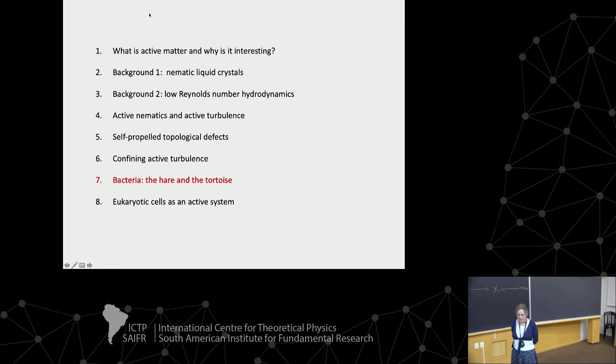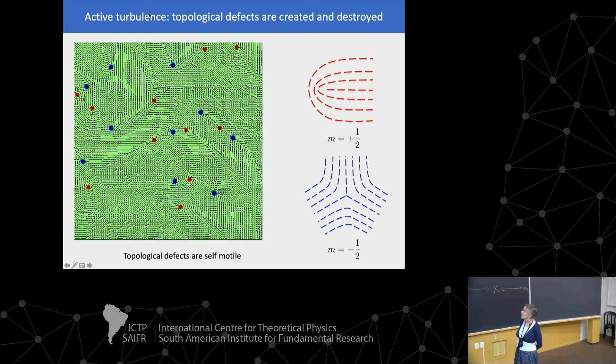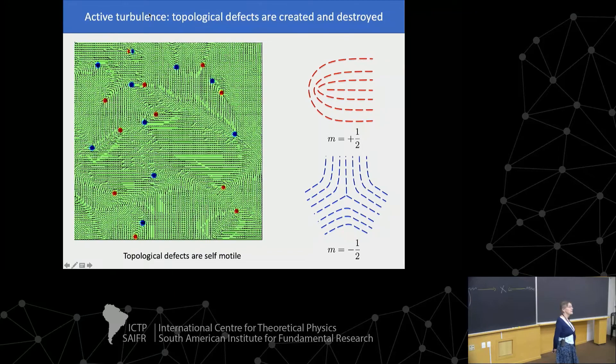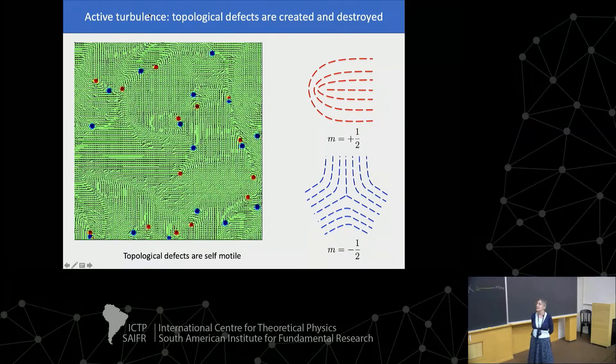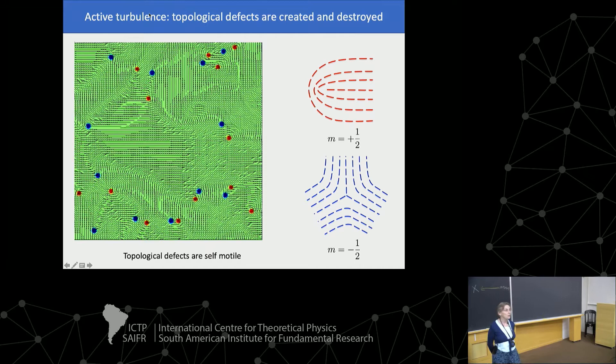Let me remind you what we're discussing. Remember this picture from last time: we have topological defects. In these active systems, plus and minus one-half topological defects are created in pairs, move around, and then are destroyed in pairs. You end up with something like a gas of topological defects, and the defects are self-motile — you can look at the flow fields around them.